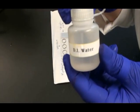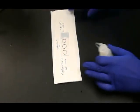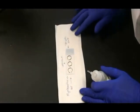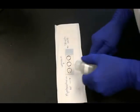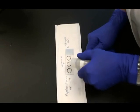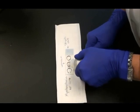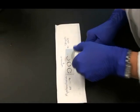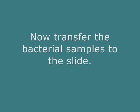I'm going to take a dropper bottle of water and put a small drop of water in each of those circles. This is what I'm going to mix my bacterial samples into. Now my slide is ready for the bacterial samples.